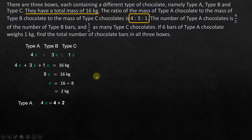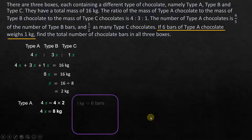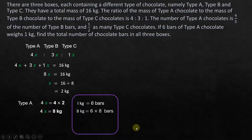The mass of type A chocolate is 4x = 4 × 2 = 8 kilograms. Now, six bars of type A chocolate weighs 1 kg — this links the number of bars to mass, but only for type A. So 1 kg = 6 bars, and 8 kg = 6 × 8 = 48 bars. Type A has 48 bars. We cannot use this same logic for type B and type C.